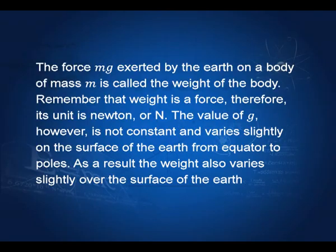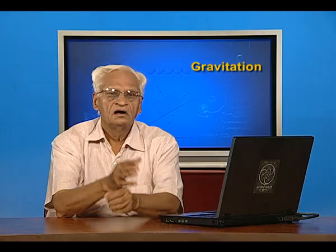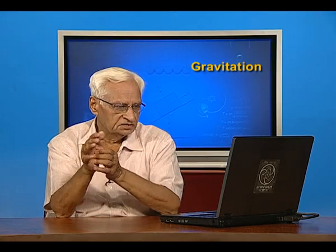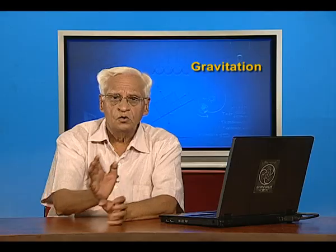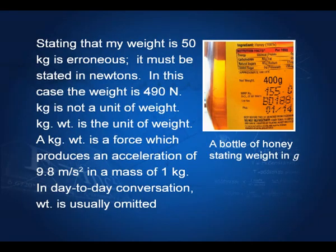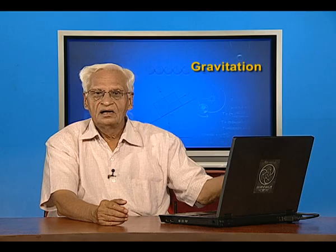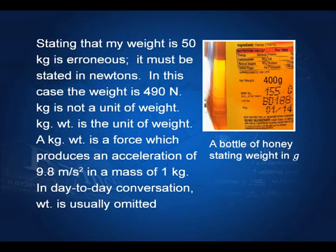The force mg generated by the earth on a body of mass m is called its weight. Remember that weight is a force; therefore its unit is Newton (N). The value of g is not constant and varies slightly on the surface of the earth from the equator to the poles, so the weight also varies slightly over the surface of the earth. Saying 'my weight is 50 kilograms' is erroneous; what we should say is 'my weight is 490 Newtons,' because weight is a force and we must use units of force.